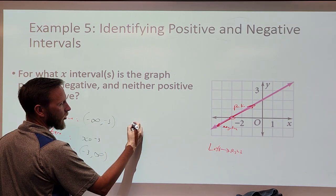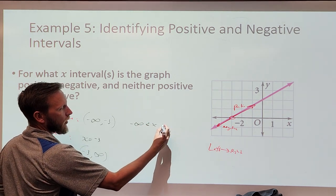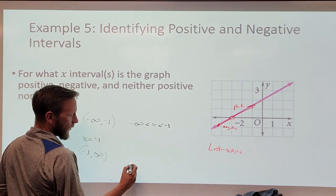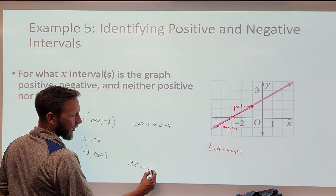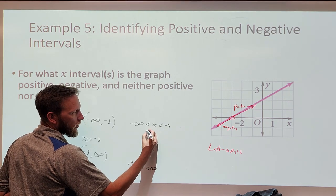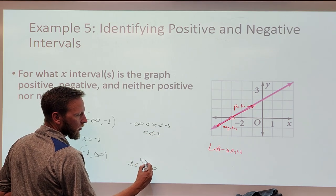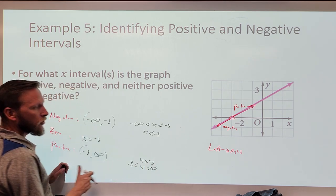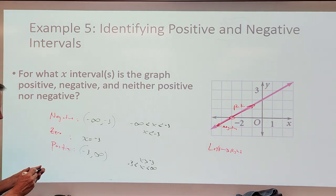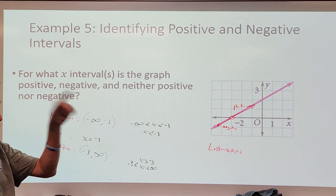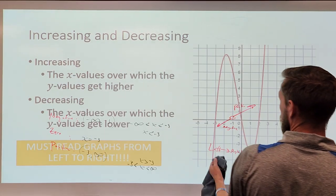If we're going to express that as inequalities using set builder notation, we'd say negative infinity is less than x is less than negative 3, or negative 3 is less than x is less than positive infinity. There's set builder form, inequality form, and interval notation. Identifying the zero where it's neither positive nor negative is really critical — being able to see that in the graph or identify it through the equation is going to be critical work.